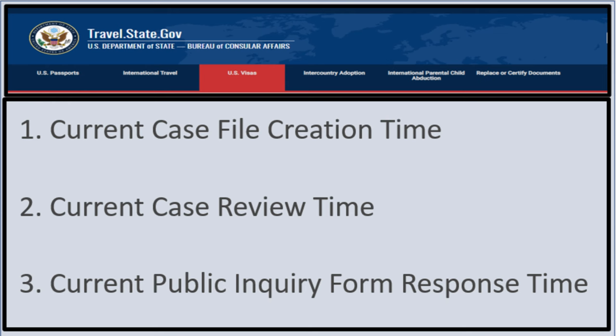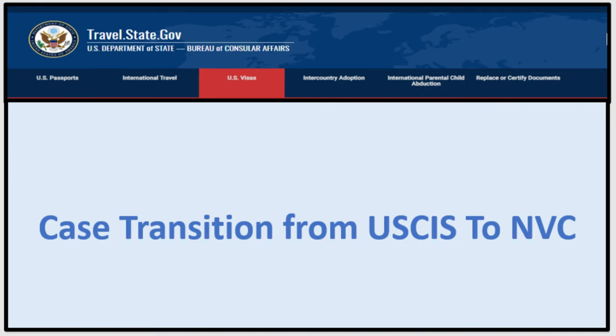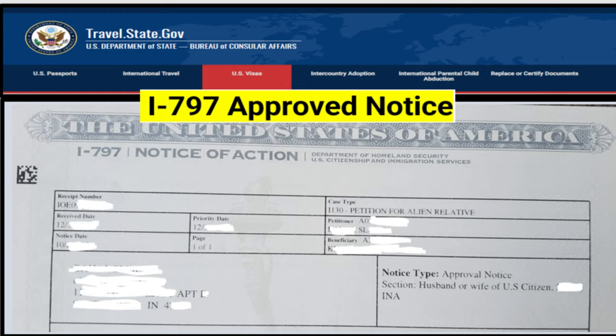Let's talk about the case transition from USCIS to NVC. Once USCIS approves your petition, they will send you an I-797 approved notice like this one right here. It has some important information about the petitioner and beneficiary — mainly alien numbers, receipt number, and the notice type, which is of course an approval notice.